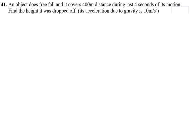In this question they say an object does free fall and it covers 400 meters distance during the last 4 seconds of its motion. Find the height at which it was dropped off. I know acceleration due to gravity is 10 meters per second squared. So I do not know the height the object is coming from, but it started from 0 meters per second, it was dropped. And then they're saying that it will cover 400 meters in 4 seconds.